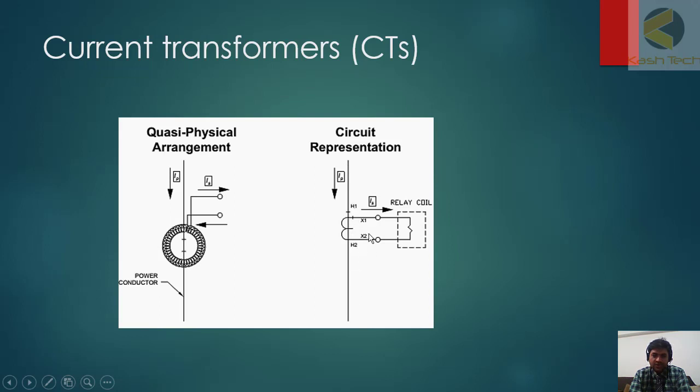The primary is marked as H1, H2. Secondary is marked as X1, X2, and it is going to the current coil. This is the direction of current coming in, and this is the direction of current coming out.